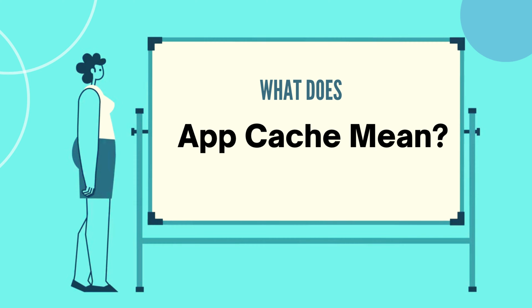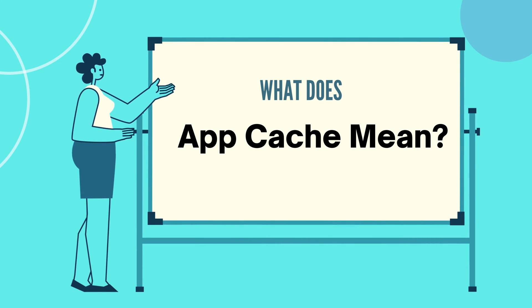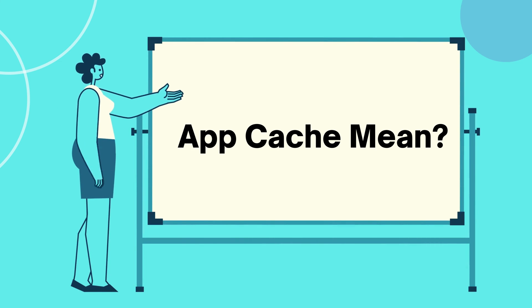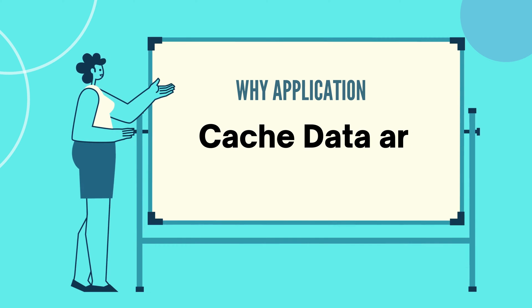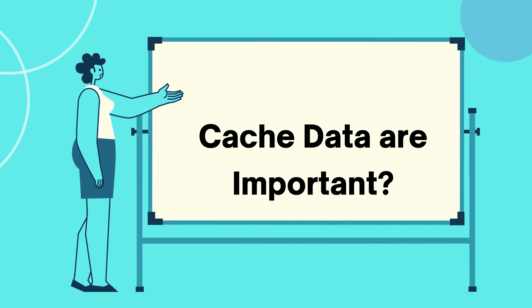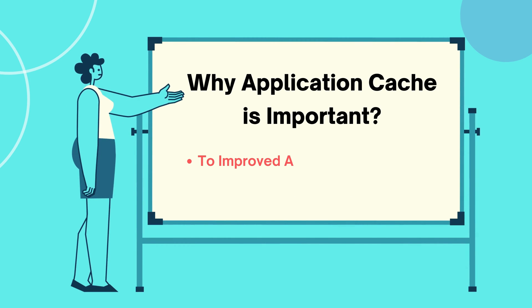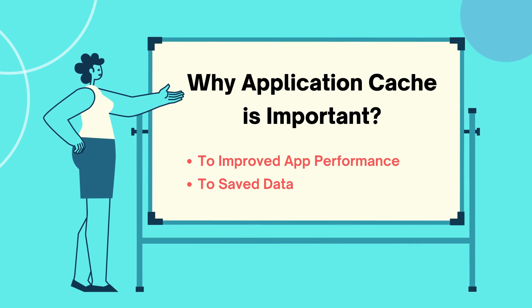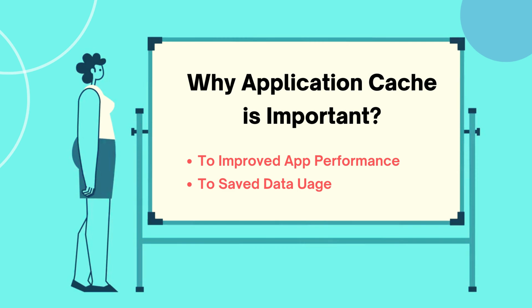Now let's learn why caches are important. App cache can improve app performance by reducing loading times. For example, if you frequently use a social media app, the app may cache images and other media files so that they don't have to be downloaded every time you open the app. This can make the app faster to use.